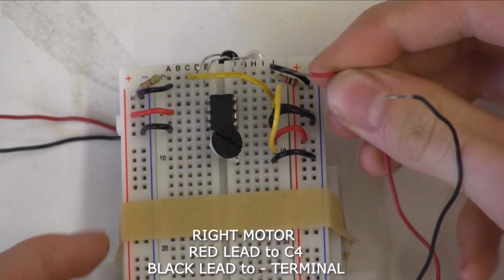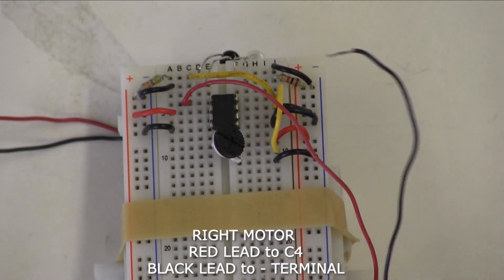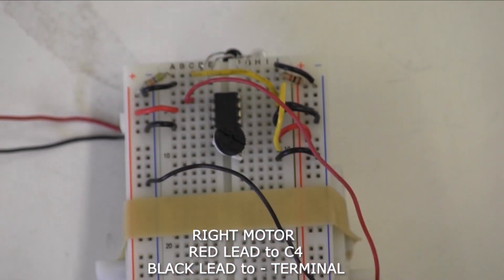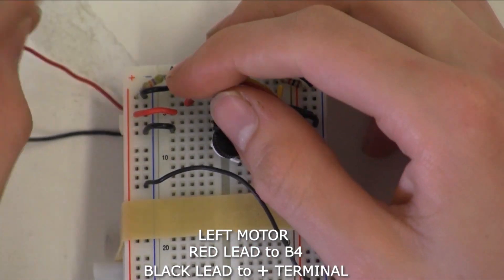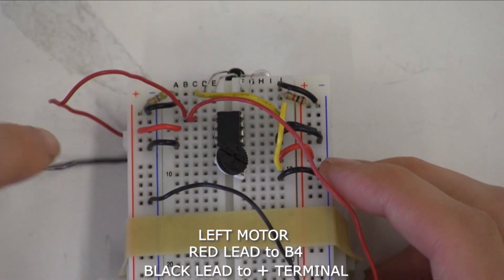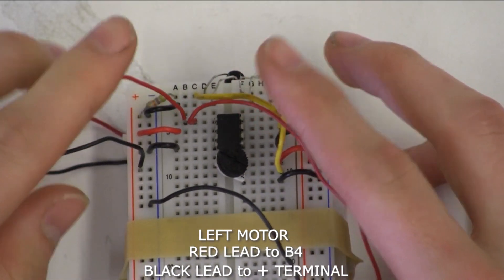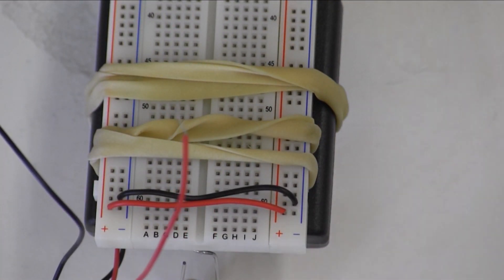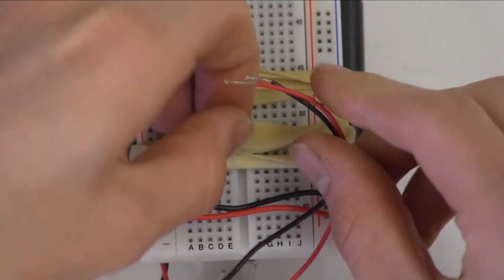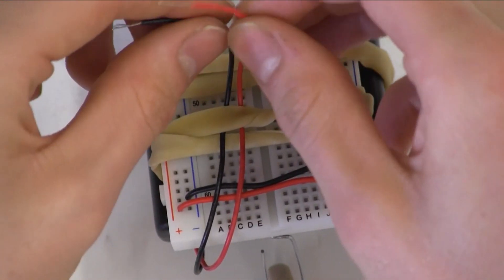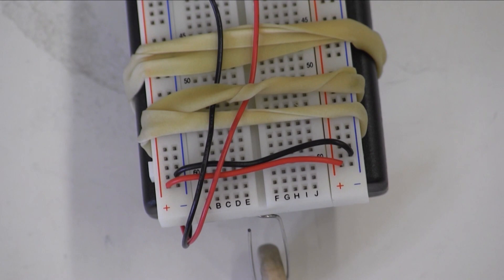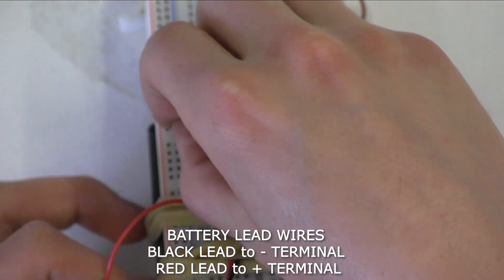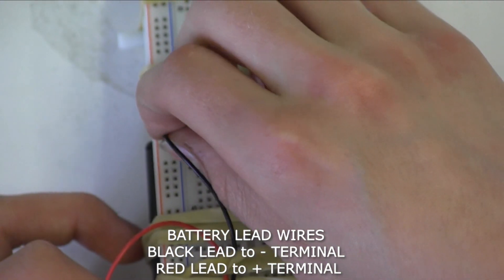At the front of the board, plug the red wire from your right motor into port C4, and the black wire into the negative terminal on row 13. Then take the red wire from your left motor and plug it into port E4, and the black wire into the positive terminal on row 9. Plug your black wire into the negative on row 39, and your red wire into the positive on row 43.